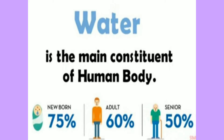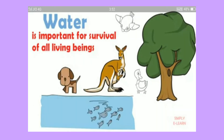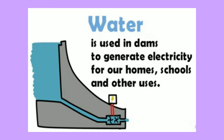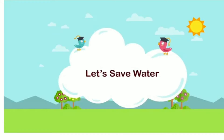Water is very important to our body, so we should drink 6 to 7 glasses of water every day. Water is important for survival of all living beings. Water is used to grow crops and vegetables for our food. Water is also used in dams to generate electricity for our homes, schools and other users. So, water is very important in our daily life.